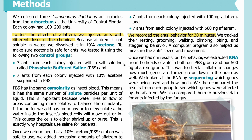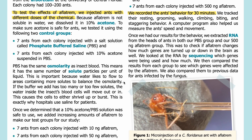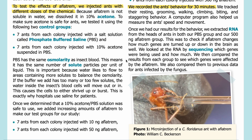The two control groups were: seven ants from each colony injected with a salt solution called phosphate buffered saline, or PBS; and seven ants from each colony injected with 10 percent acetone suspended in PBS. PBS has the same osmolarity as insect blood, meaning it has the same number of solute particles per unit of liquid.